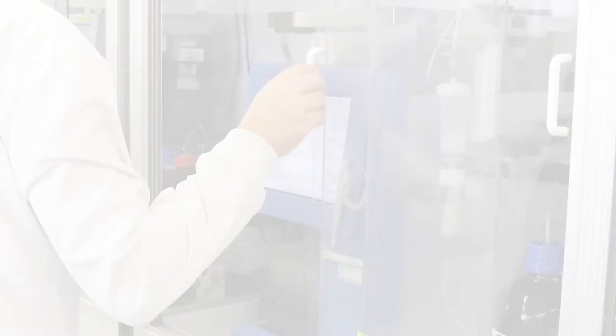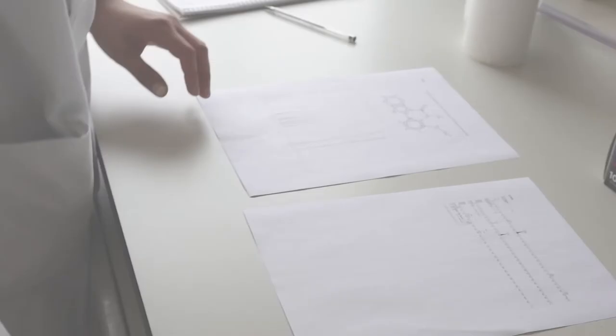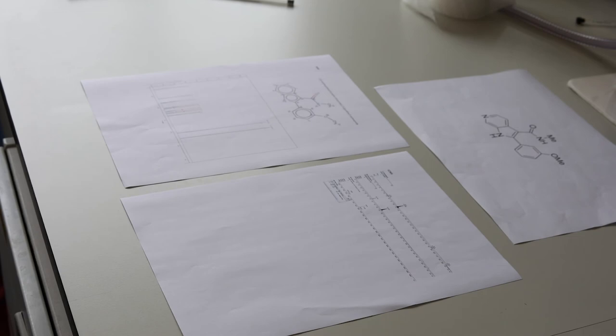We would then typically load it onto a silica cartridge and purify the compound on one of our automated purification systems. Once we've isolated the pure compounds, we would analyze their purity and structure using several methods such as proton NMR spectroscopy and also LCMS.